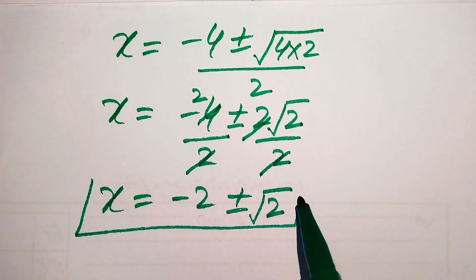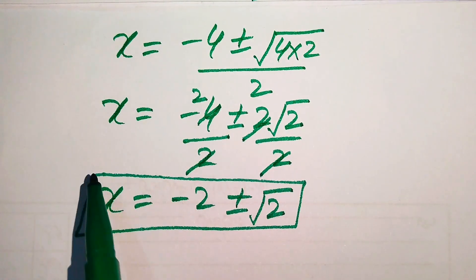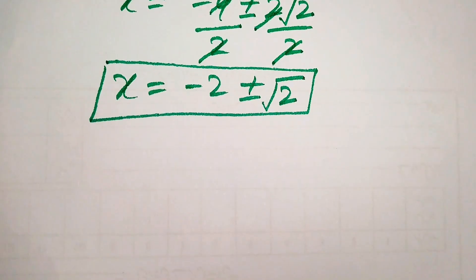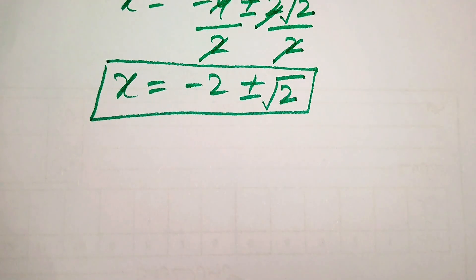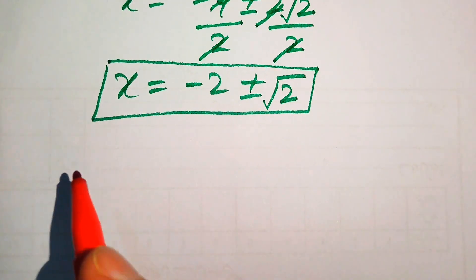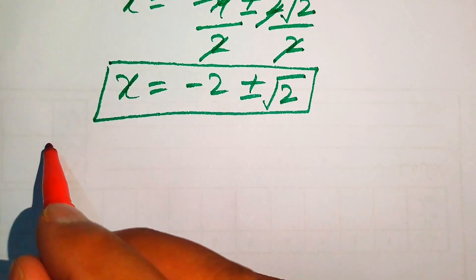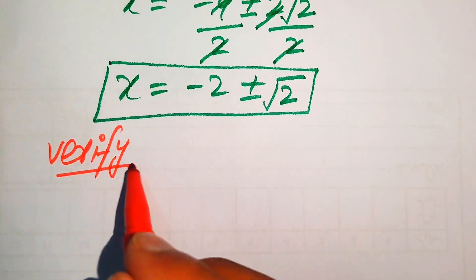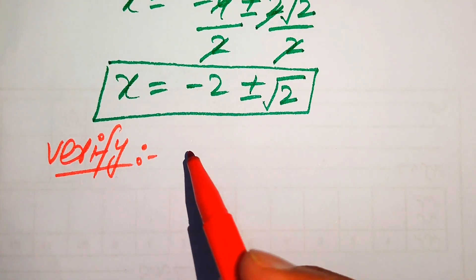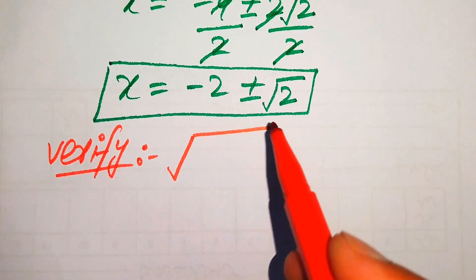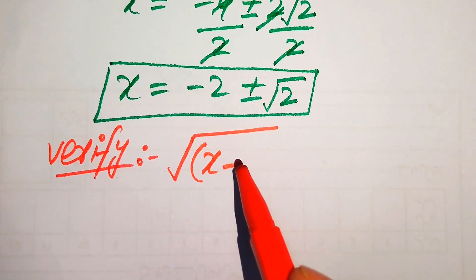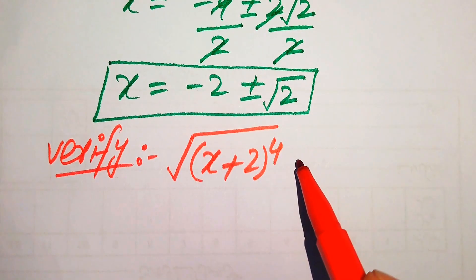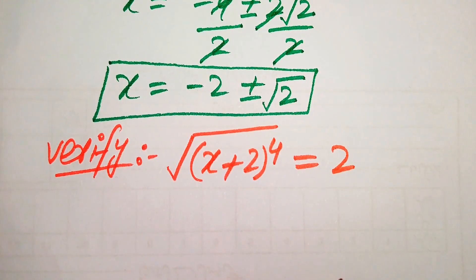So we get these two roots of the given equation: x = −2 + √2 and x = −2 − √2. In the further steps we need to verify these two roots and check which are solutions and which are extraneous roots. We copy down the original equation: the square root of (x+2)^4 equals 2.